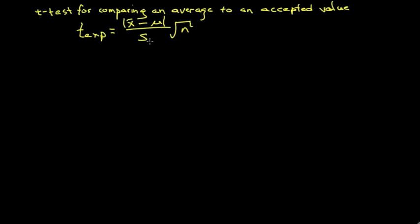The average value, the standard deviation, we have the number of measurements, and using an accepted value, we compare or take the difference between that and our average value. And we compare this experimental value of t to a value from the table at a particular probability level.